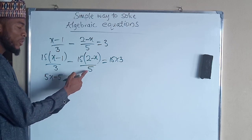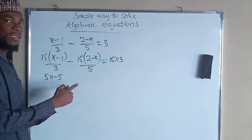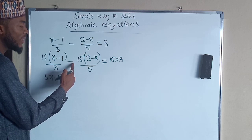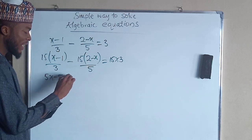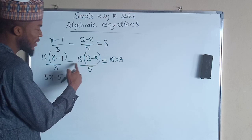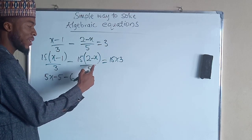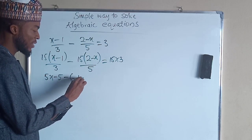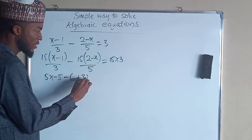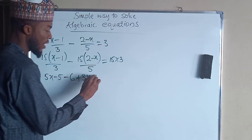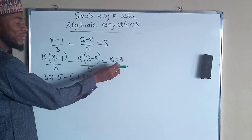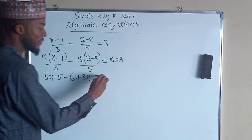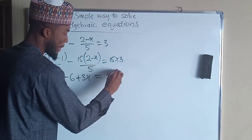And here, you know that 5 can go into 15 three times. Then negative 3 times 2 is what? Negative 6. Then negative 3 times negative x is going to give you positive 3x. And this is equal to 45. 15 times 3 which is 45.